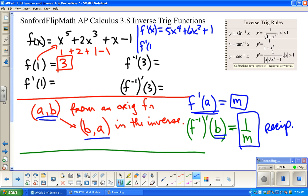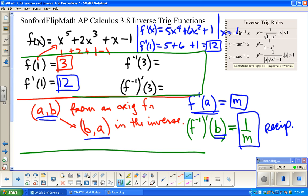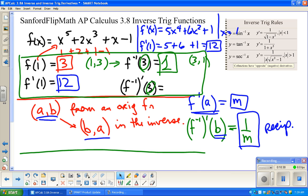So f prime of 1, we're just going to evaluate this at x equals 1. F prime of 1 is now going to be 5 times 1 to the fourth, plus 6 times 1 squared, plus 1, so that's 12. Now, what I need you to see here is the other parts of this question are asking about the x value 3, but this is the x value 3 for the inverse. The original was at 1, 3, this is now at 3, 1 for the inverse. So this is just 1. And then the magical part of this is the derivative of the inverse at 3 is just going to be 1 over 12. And that is done.